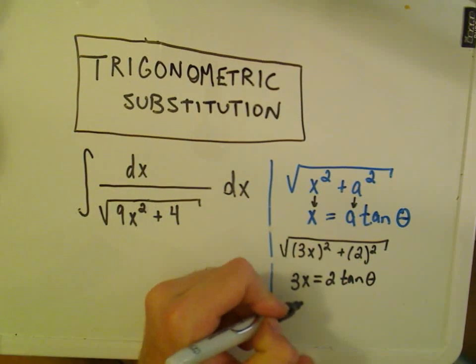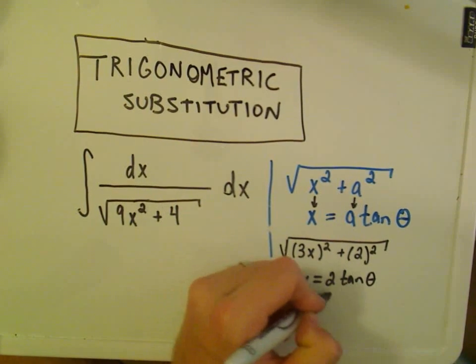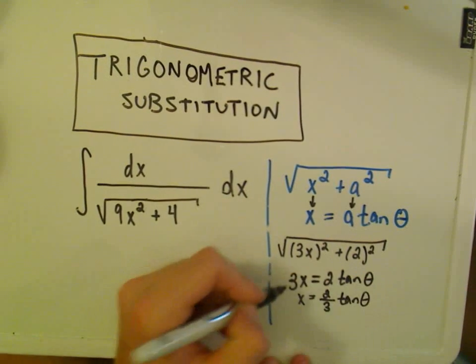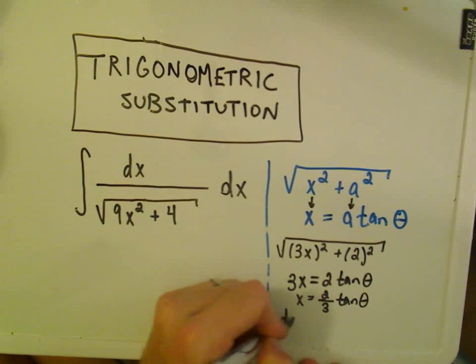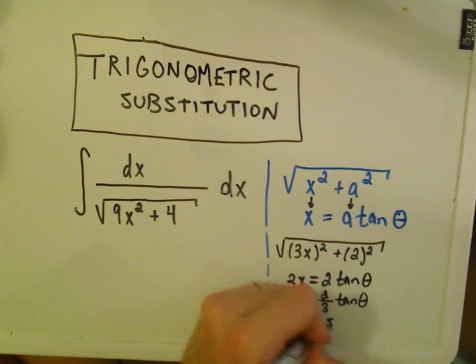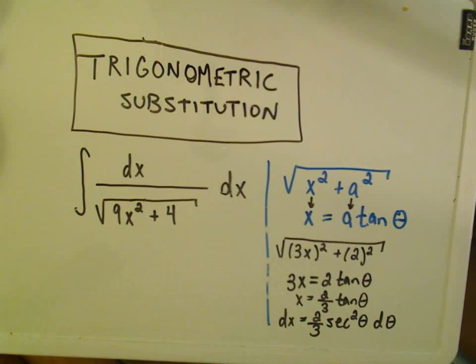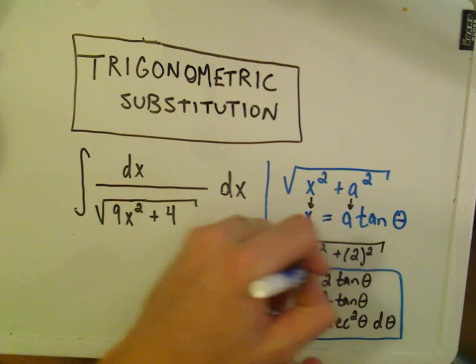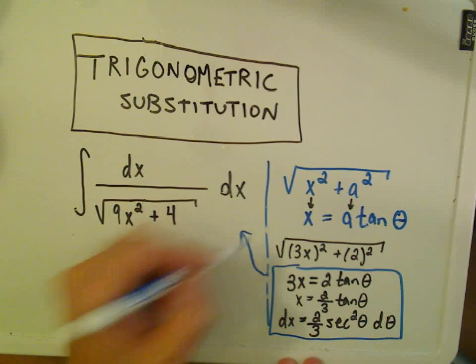Notice if we calculate this, we get x equals 2 over 3 tangent theta, just by dividing both sides by 3. Take dx, we'll get 2 thirds. The derivative of tangent is secant squared theta d theta. So I'm going to plug this stuff into my integral over here on the left.